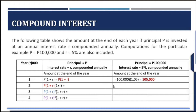On the second year, the 105,000 is again applied the interest rate of 5%, so times 1.05. The result is 110,250. Notice that what we did is principal times (1 + rate) squared. So 110,250 is the same as 100,000 times 1.05 squared.